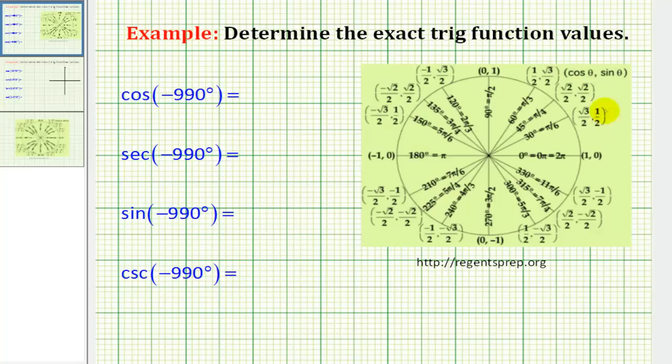Number one, we can use a unit circle, or number two, we could use reference triangles. In this example, we'll use the unit circle.